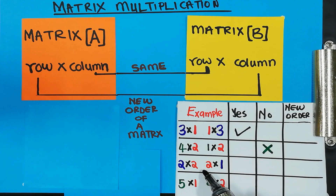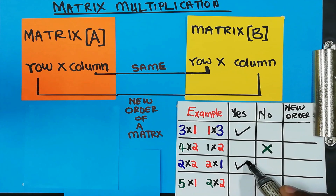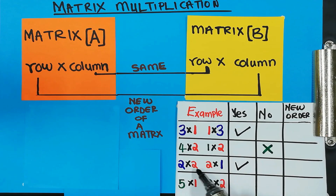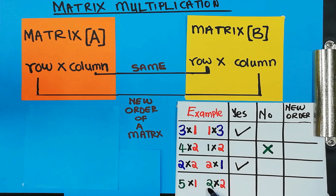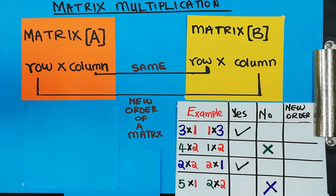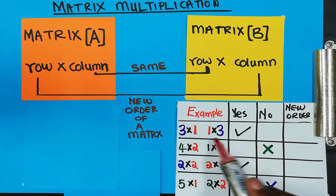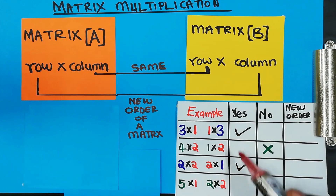The next one is a 2 by 2 matrix and a 2 by 1 matrix — the middle numbers are the same, so we can continue to multiply these two matrices. The last part is a matrix of order 5 by 1 and 2 by 2; these numbers are not the same, so we cannot continue with this multiplication.